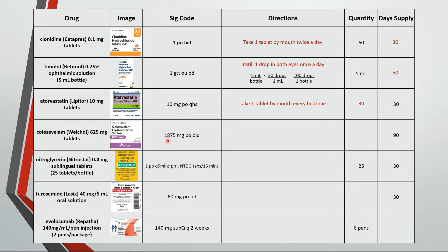1875 milligrams is the same as three tablets because each tablet is 625 mg. So the directions are take three tablets by mouth twice a day. Three times two for 90 days is 540 tablets.